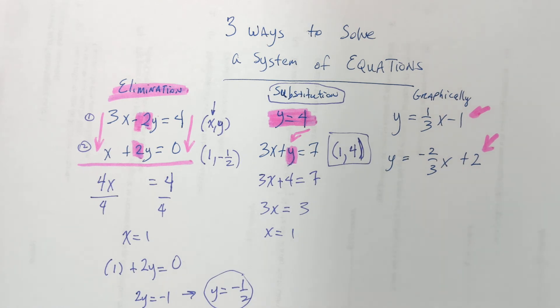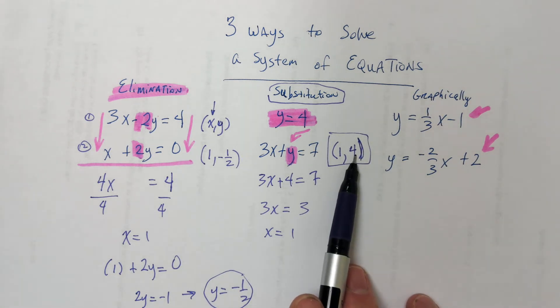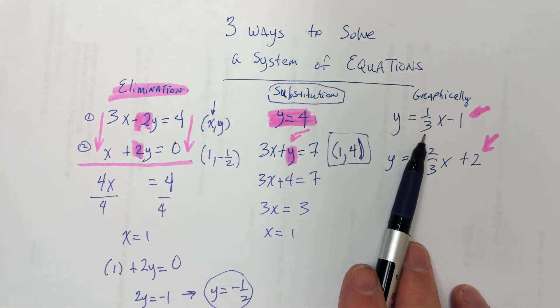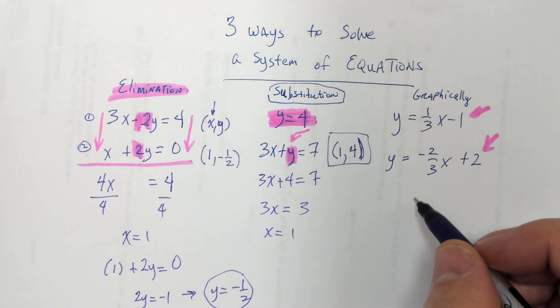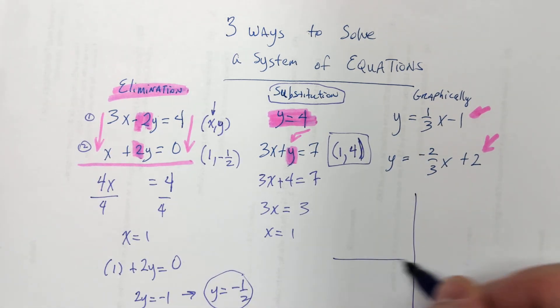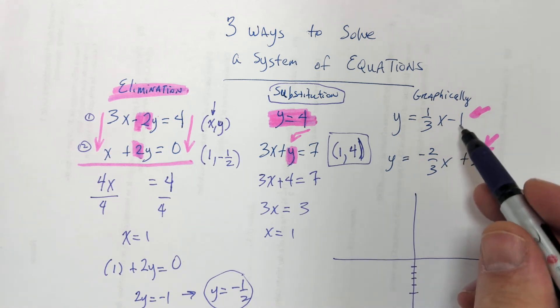The giveaway for graphs is if both equations are written in a way that makes them easy to graph. But this one is sometimes the easiest to do, but it's not very accurate. Because sometimes, if these were fractions or decimals, you'd have a hard time seeing that on a graph. But, these are both easy to graph because they're in slope-intercept form.